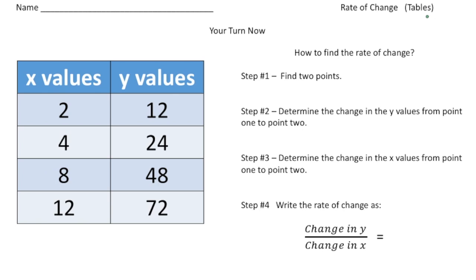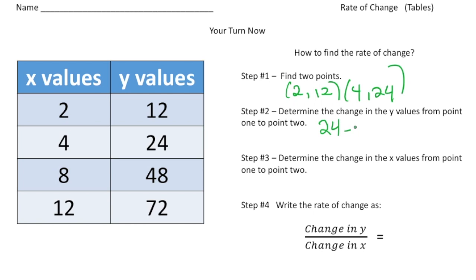Welcome back — let's go through the practice problems. Step one: find two points. I'll use the first two. Our first point is (2, 12) and our second point is (4, 24). Step two: determine the change in y-values. Our y-values are 24 and 12, so 24 minus 12 gives a change of 12.